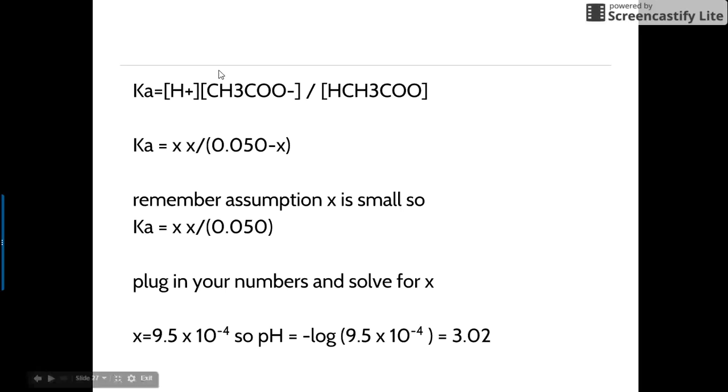Then if you write your Ka expression, or products over reactants, plug in your Xs. Now, you have Ka, so you should be able to solve for X. You would need to use the quadratic, but Ka is small, so we're going to use the assumption that this X is really small compared to the 0.05, so we leave it out. Plug in our numbers. You solve.